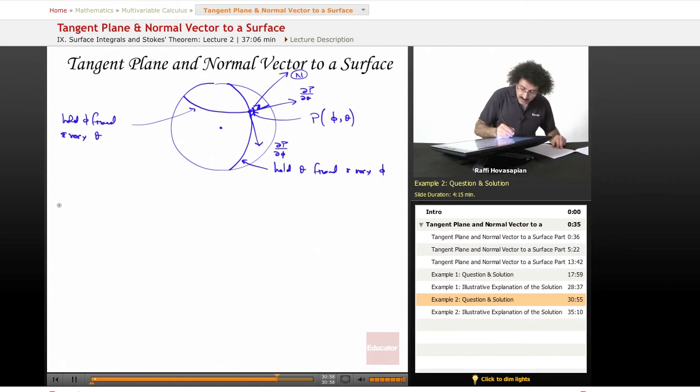Let's do another example just to sharpen up our skills here. So example number two, we will let the parameterization of t and theta be equal to t cosine theta, t sine theta, and t squared.